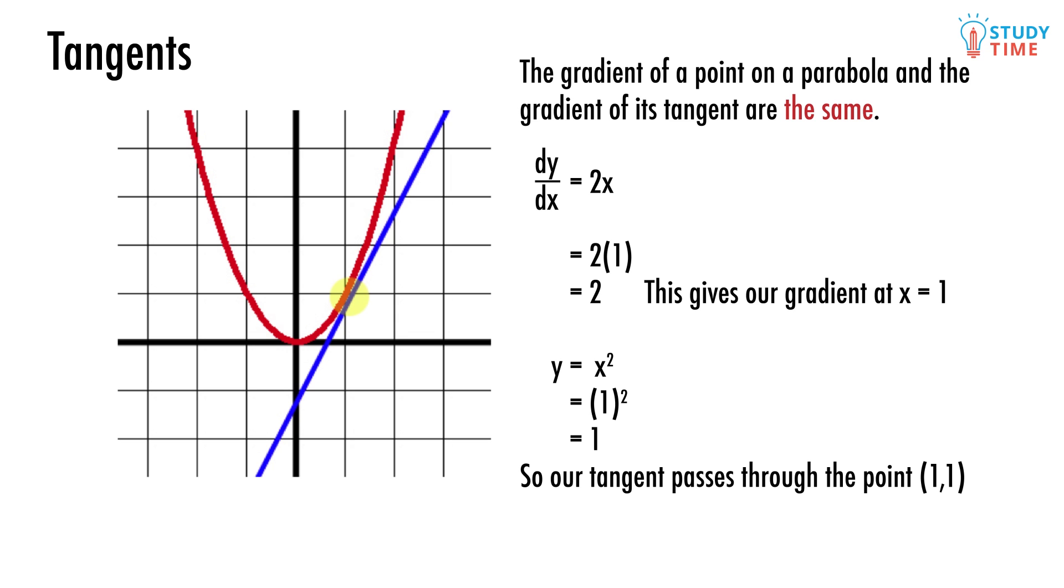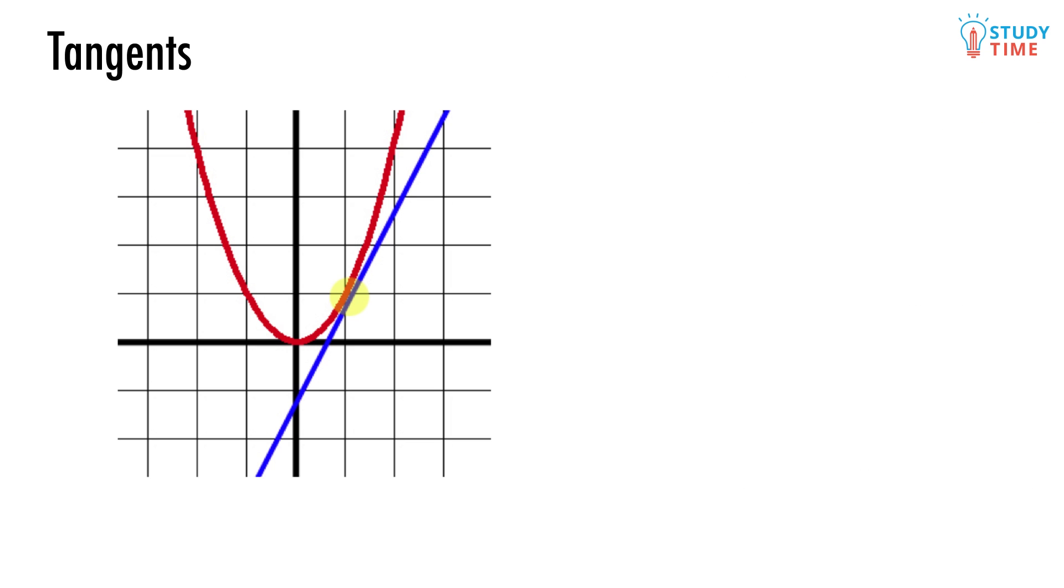Right, so let's recap what we know so far about this mysterious blue tangent. It has a gradient of 2 and it passes through the point 1, 1. This information is enough to let us find the equation of the tangent.